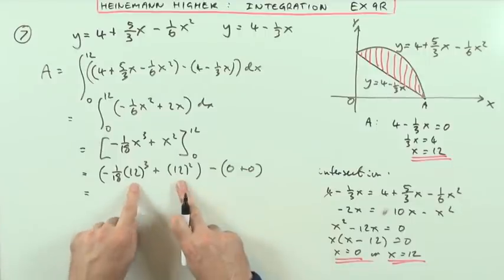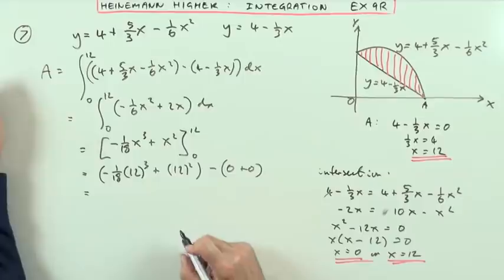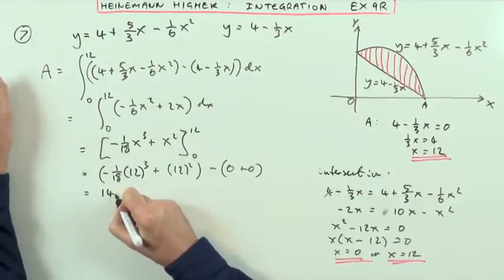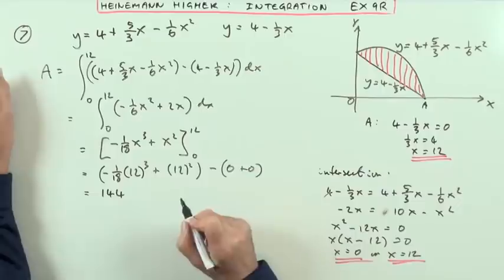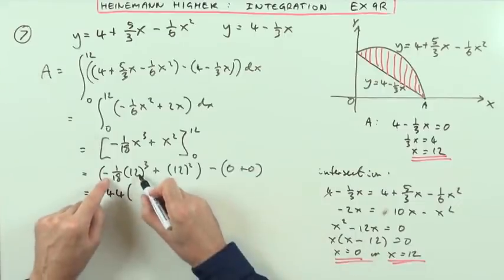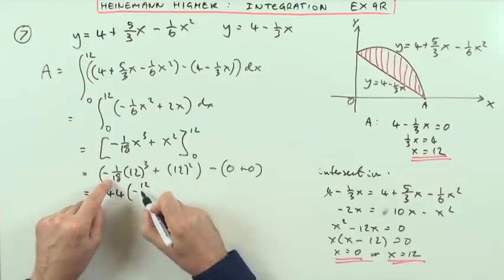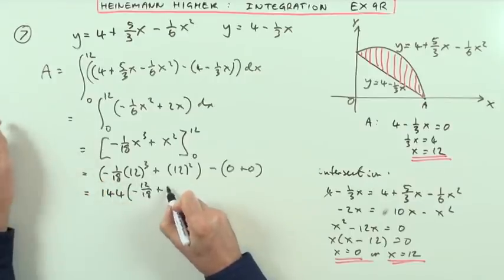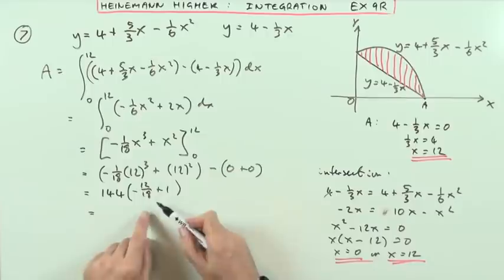One thing I could do here is take the common factor of 12 squared. So I could take 144 out of that. So I've got 144 times, and then what's going to be left will be, I've got negative 12, there's one 12 there, over 18, plus 1.